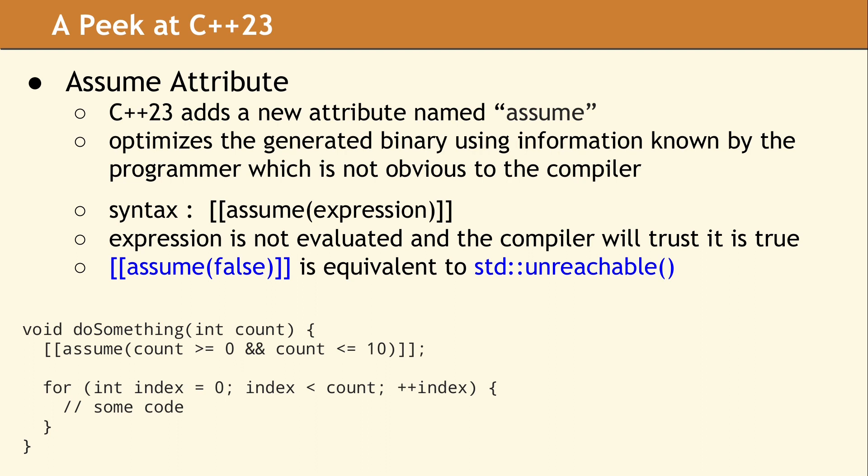C++23 added a new attribute with the name [[assume]]. When using this attribute, your code must supply exactly one argument, which is an expression that must evaluate to a Boolean. It may seem odd, but the compiler will not evaluate this expression. The compiler uses this expression for optimization, and will assume the expression is always true. In this example, our source code makes the assumption that the passed variable count will have a value from 0 to 10. This can be useful for compiler optimization — for example, the compiler may choose to unroll the for loop and instead generate 10 copies of the body. The binary output can then check the value of count once and jump to the correct location in the unrolled code.